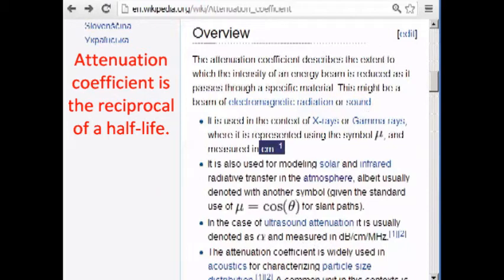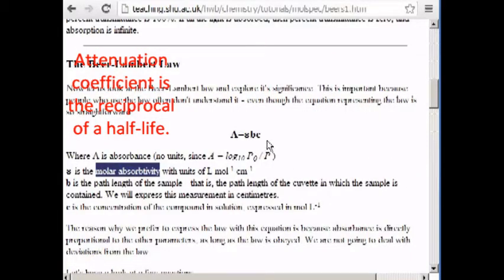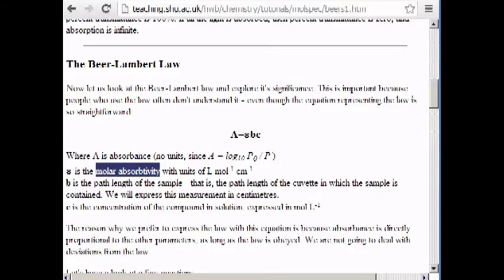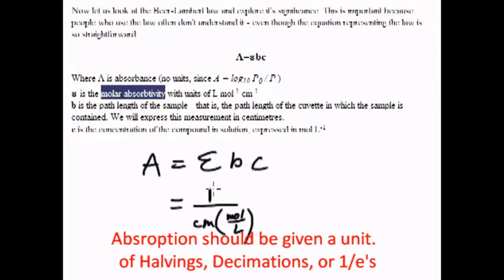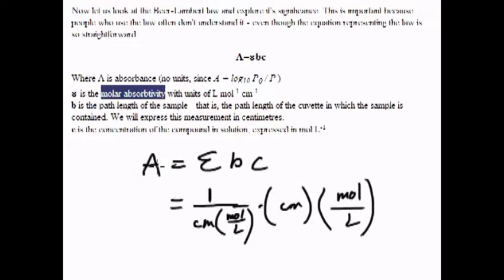Let's just use this equation over here in Beer's Law to give us something that would give us a per centimeter. I have absorbance equals molar absorptivity times path length times the concentration. This epsilon is given, or the molar absorptivity is just a reciprocal of centimeters times concentration, and that is multiplied in turn by the path length, which is in centimeters, and the concentration, which is in moles per liter.